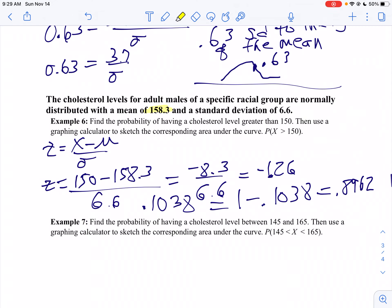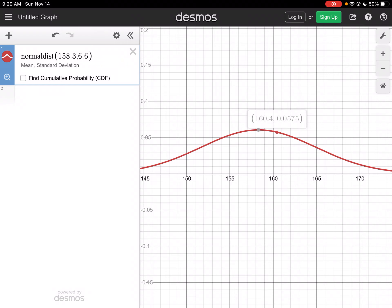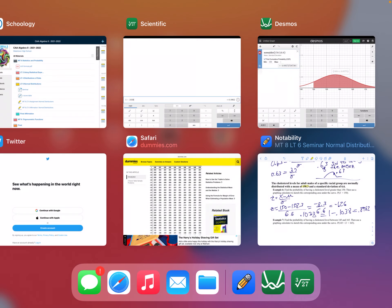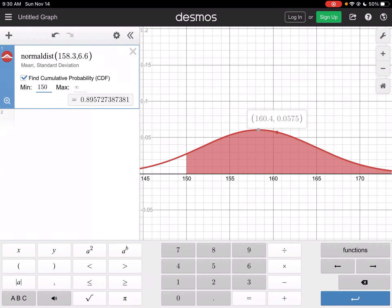Okay, let's take a look at example 7. It says find the probability of having a cholesterol value between 145 and 165. Then use the graphing calculator to sketch the corresponding area into the curve. So this one, I'm going to do the same thing I just got done doing, except my minimum is going to be, since I want to go from 145 to 165, I start at 145. Then I'm going to go to 165 for my maximum.